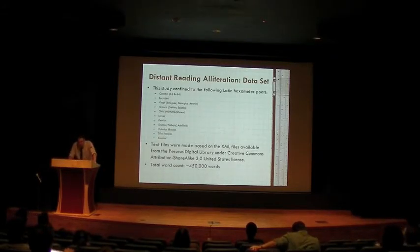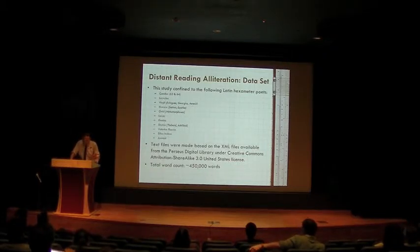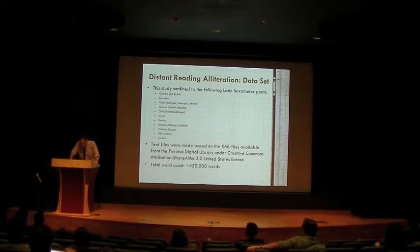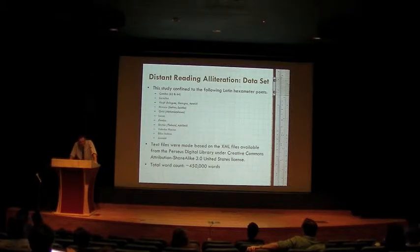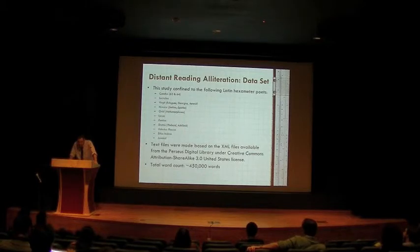For my data source, I made a collection of text files of Latin hexameter works based on the XML files available in the Perseus Digital Library. Tags were stripped, and some pre-processing — but as little as possible — was done. This collection consists of roughly 75,000 lines or 485,000 words. Following Meyerhofer, I have assumed that the phonology of Latin consonants is persistent and offer a one-to-one correspondence between grapheme and phoneme. In other words, sound alliteration in my study more or less maps to letter alliteration.